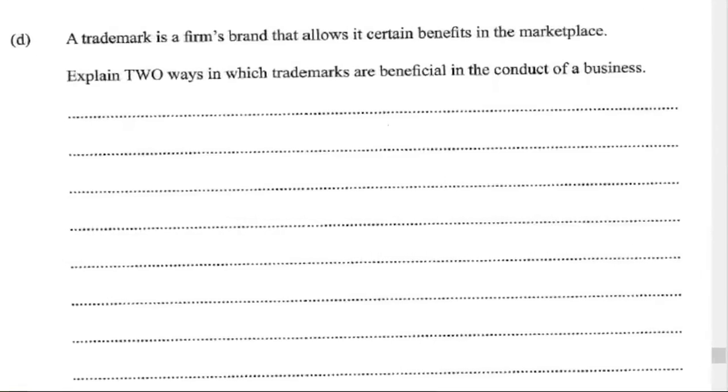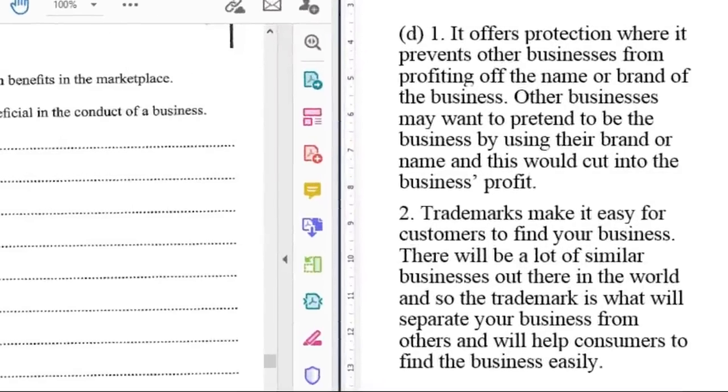Let's look at D. A trademark is a firm's brand that allows it certain benefits in the marketplace. Explain two ways in which trademarks are beneficial in the conduct of a business. First, it offers protection where it prevents other businesses from profiting off the name or brand of the business. Other businesses may want to pretend to be the business by using their brand or name, and this would cut into the business's profits. Another benefit is that trademarks make it easy for customers to find your business. There will be a lot of similar businesses out there, and the trademark is what will separate your business from others and help customers to easily identify your business.